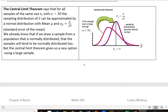And what the Central Limit Theorem says is that for all samples of the same size n with n greater than 30, the sampling distribution of the mean of the sample can be approximated by a normal distribution with mean mu and the standard deviation,